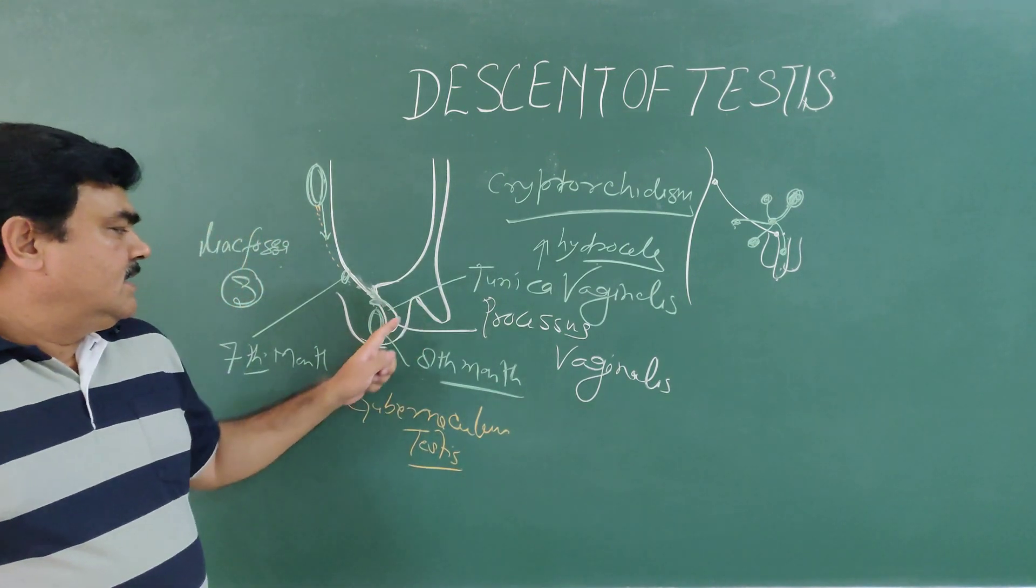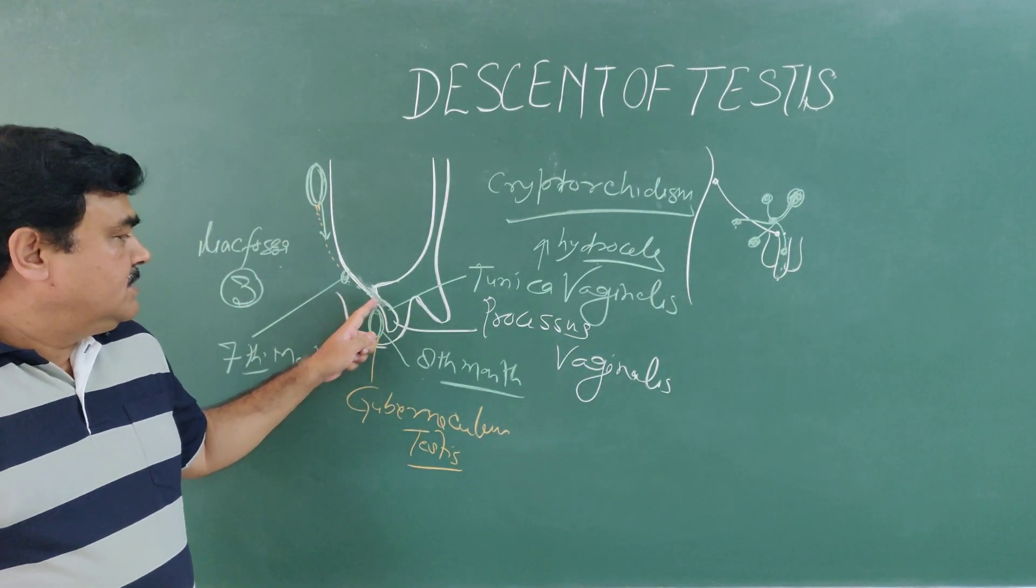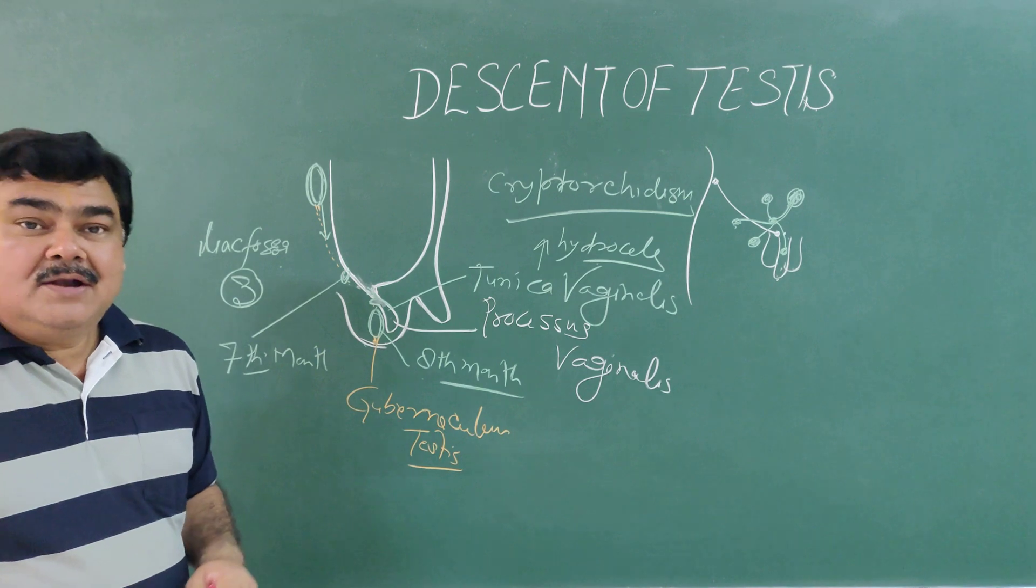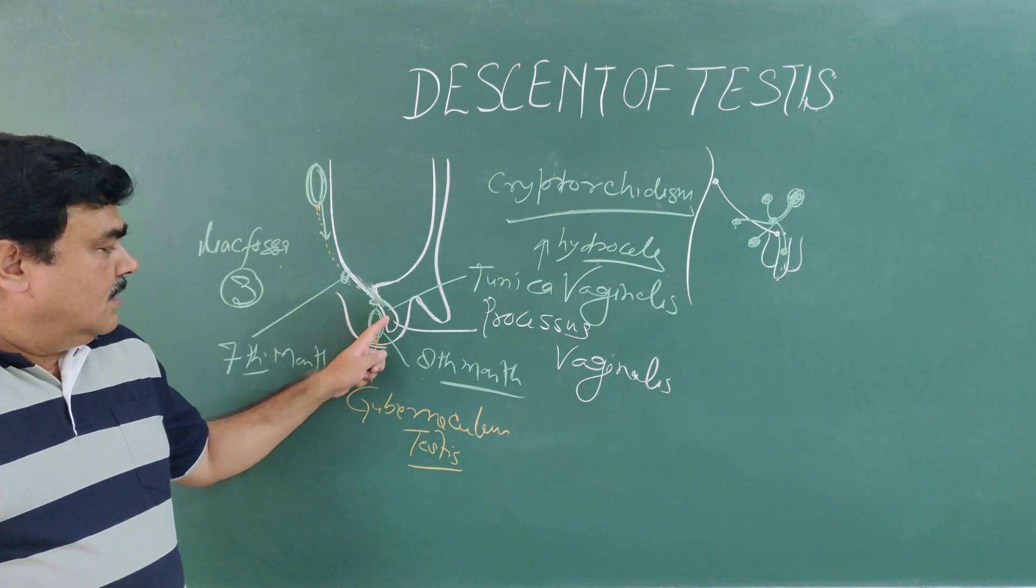Cryptorchidism is the condition in which the testis cannot descend down to the scrotum.